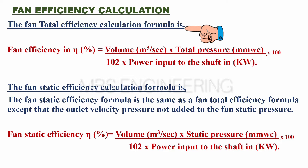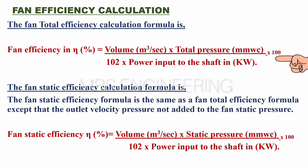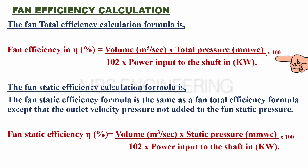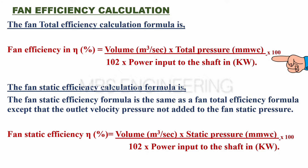We learn about how to calculate the efficiency of the fan. The fan total efficiency calculation formula: the fan total efficiency eta, in percentage, is equal to volume in cubic meters per second, multiplied by total pressure in mmWC, multiplied by 100, and then divided by 102, into power input to the shaft in kilowatts.